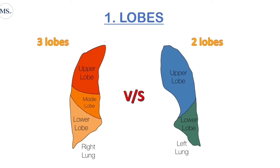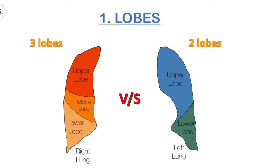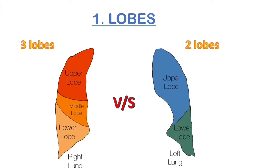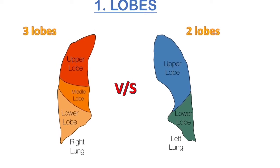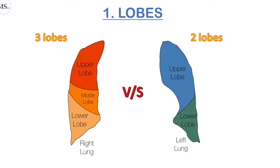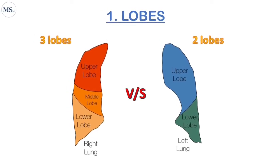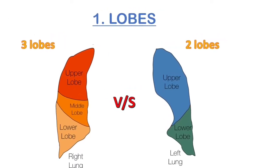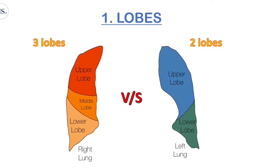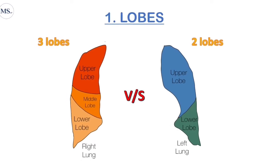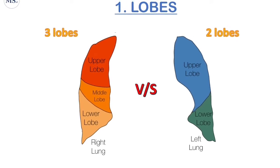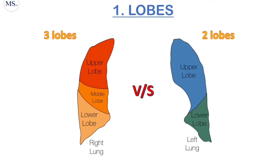The first difference is lobes. In the right lung there are three lobes: upper lobe, middle lobe, and the lower lobe. In the left lung there are only two: upper lobe and lower lobe. Lobes are the sections into which our lungs are divided. As we can see in this diagram, the right lung is divided into three lobes — upper, middle, and lower.